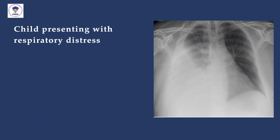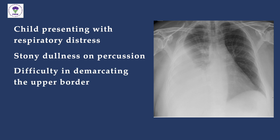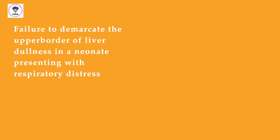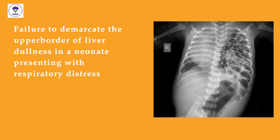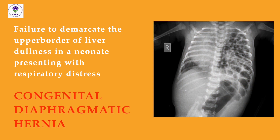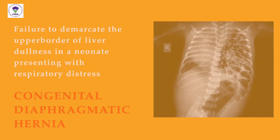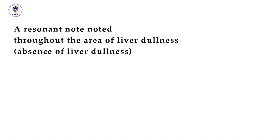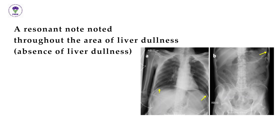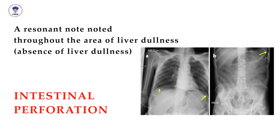Occasionally, if a child presenting with respiratory distress has stony dullness on percussion or you have difficulty demarcating the upper border, you might be dealing with empyema. Failure to demarcate the upper border of liver dullness in a neonate presenting with respiratory distress is suggestive of congenital diaphragmatic hernia. A resonant note throughout the area of liver dullness — absence of liver dullness — is suggestive of pneumoperitoneum due to intestinal perforation.